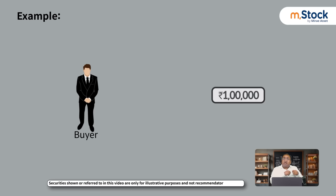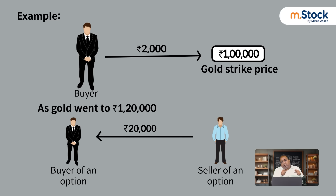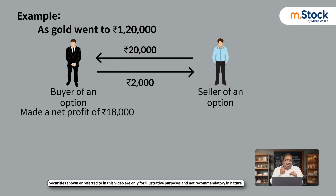Correlating with the previous gold example: the other person paid me 20,000 rupees because gold went above one lakh rupees, and I had paid him only 2,000 rupees. So the net differential was 18,000 rupees as his loss. In my case, I had paid 2,000 rupees and ended up gaining 20,000 rupees, so net profit was around 18,000 rupees. That is what I gained — I was the buyer of the option.